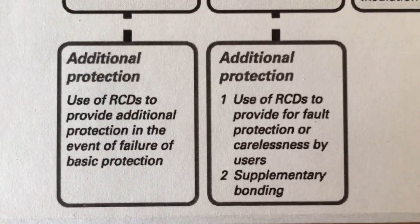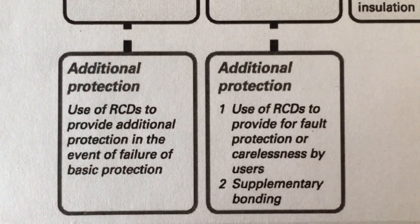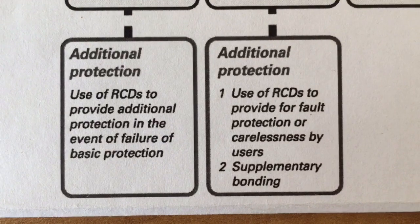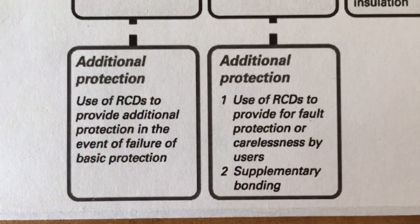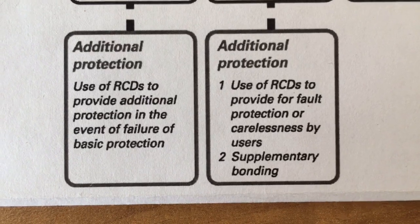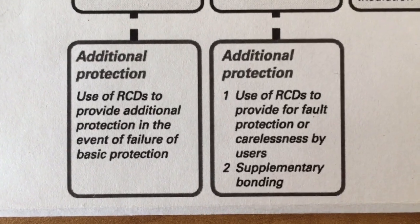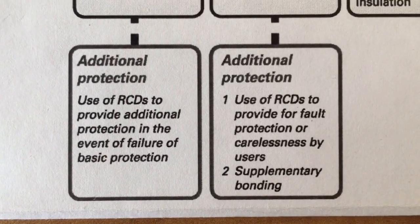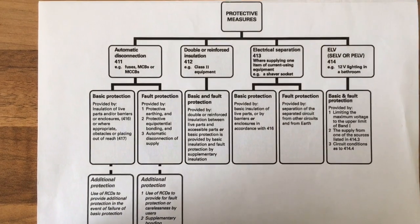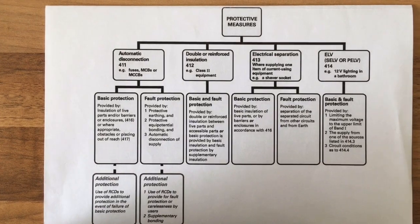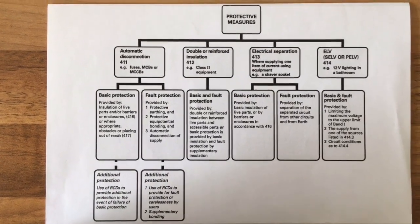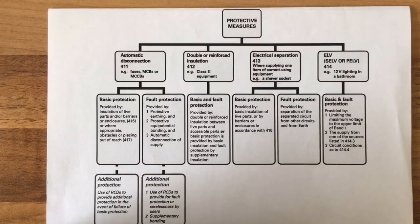You can see additional protection uses RCDs to provide additional protection in the event of failure of basic protection, and on the other hand, use of RCDs to provide fault protection for carelessness by users. It also mentions supplementary bonding there as well. So when we fit RCDs, a lot of the time it's for additional protection. When we talk about additional protection, one of the tests that we do on the RCD is the additional protection test.